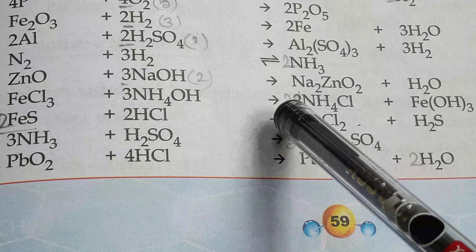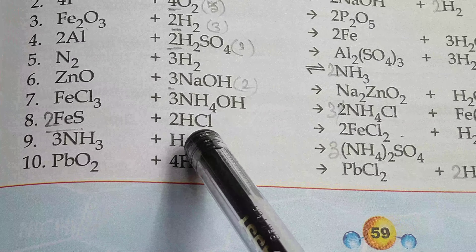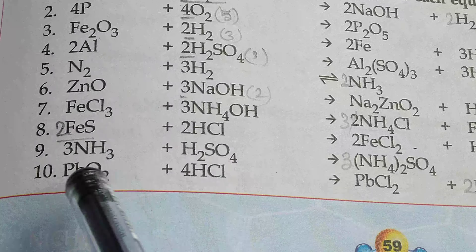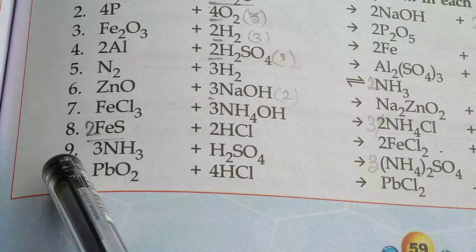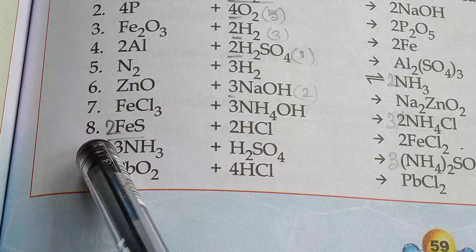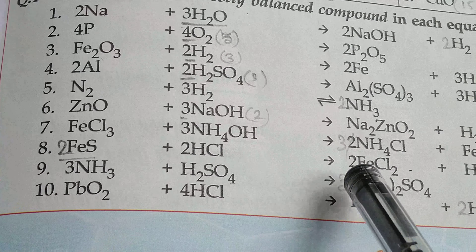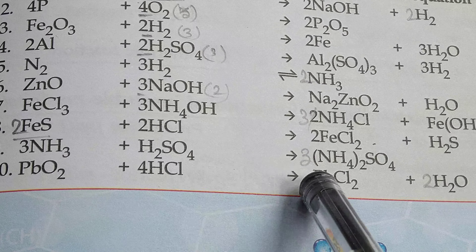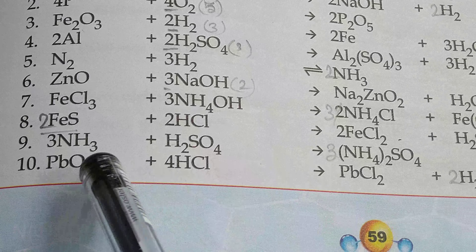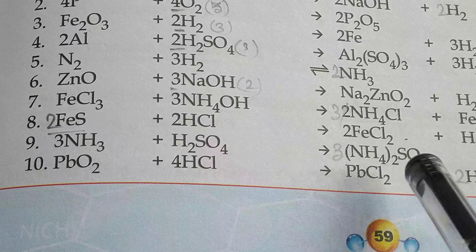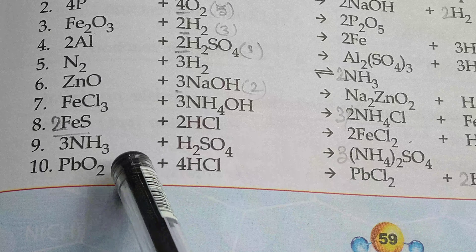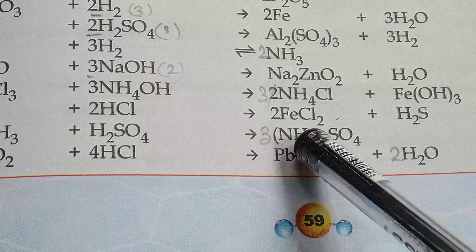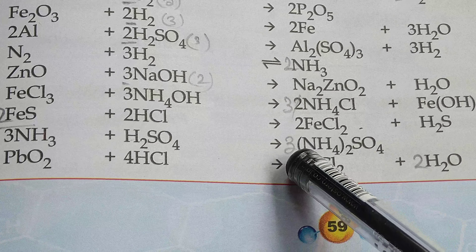Next: ZnO + 2NaOH → Na2ZnO2 + H2O. Look at the number of hydrogen: H2 means only 2, so if we write 3 here it will not equal 2. Therefore we write 2NaOH — replace 3 with 2. Next: FeCl3 + 3NH4OH → Fe(OH)3 + 3NH4Cl. Because FeCl3 is already written, if we don't put 3 here, Cl will never be adjusted — so replace 2 with 3.